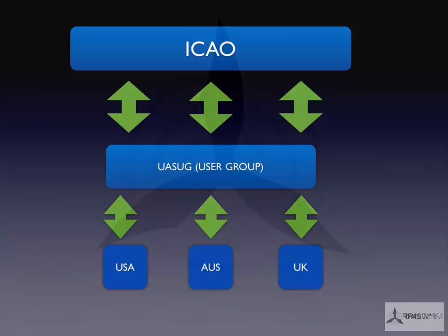A few years ago ICAO started to deal with a user group on UAS, or Unmanned Aerial Systems. They recognised the need to start liaising with various countries and find out what their needs were. In 2007, a user group was formed of quite a few countries — Australia, the US, the UK, and about 20 other countries that are part of this UAS user group. ICAO liaised with this user group, the user group liaised with each other, and they came up with a code of standard practice that everyone worked on together.